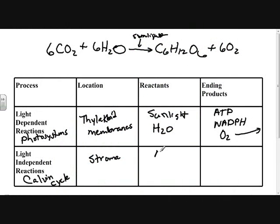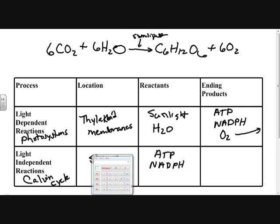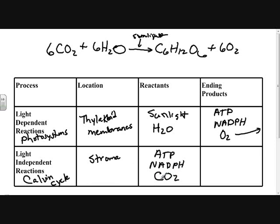In the light independent reactions, we're going to use the ATP and NADPH that we made earlier, and we're going to use CO2 from the atmosphere that the plant takes in. Finally, the ending product of the light independent reaction is glucose, our food.